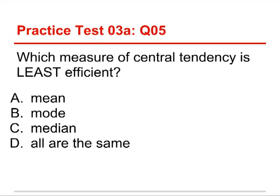Number five: which measure of central tendency is least efficient? The choices are the mean, the mode, the median, or all are the same. The answer is the mode. Efficiency means the ability to get an estimate of a population value with a certain level of precision — say, within plus or minus three points. An efficient statistic lets you achieve that precision with a smaller number of people. The mean is the most efficient as long as you're dealing with a bell curve. The median is moderately efficient, but the mode is kind of all over the place and can bounce around depending on the quirks of the data. So the mode is the least efficient, and the mean is the most efficient. That's it for the first pre-test for chapter three.